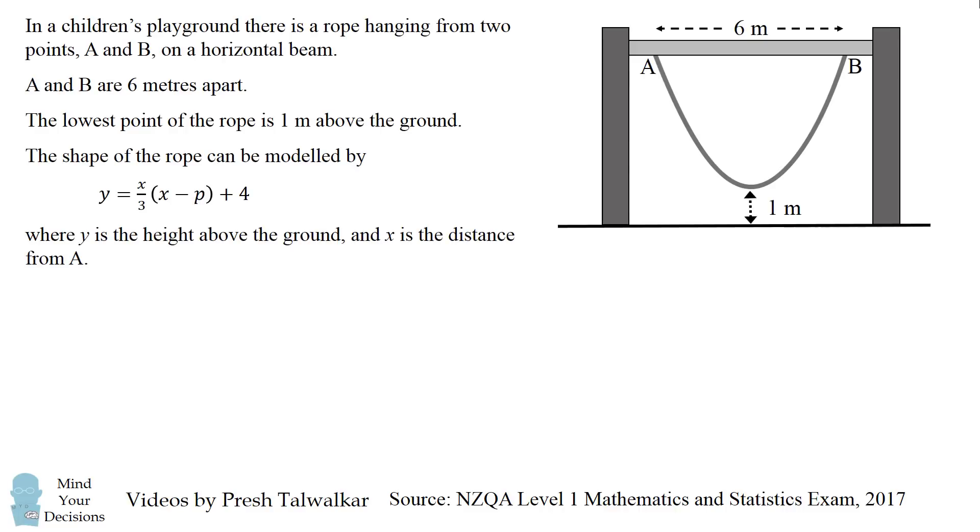So I've reproduced one of the test questions here. It comes with the following diagram. In a children's playground there is a rope hanging from two points A and B on a horizontal beam. A and B are 6 meters apart. The lowest point of the rope is one meter above the ground.